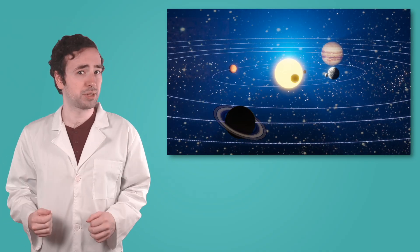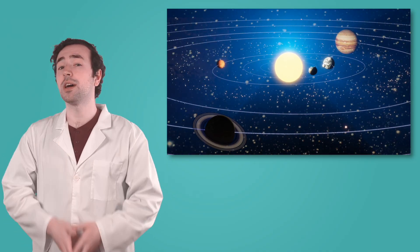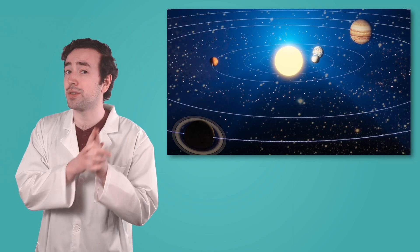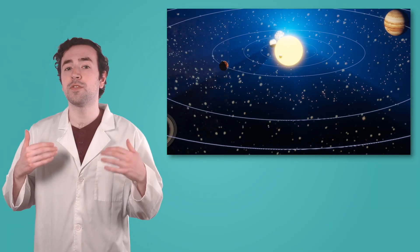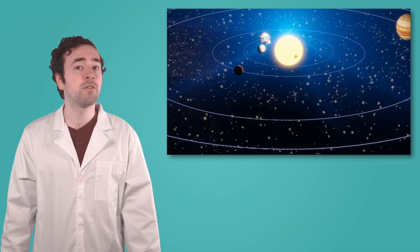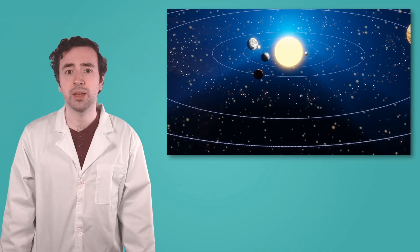We know that Earth follows a path around the Sun. Scientists, what's that path called? Yes, an orbit. And how long does it take for Earth to complete one full revolution around the Sun? 365 and one quarter days — that's one whole year. As Earth orbits the Sun, it moves through four seasons: summer, fall, winter, and spring. But Earth's orbit is only part of the reason for these changes. There's something else that plays a big role, too.